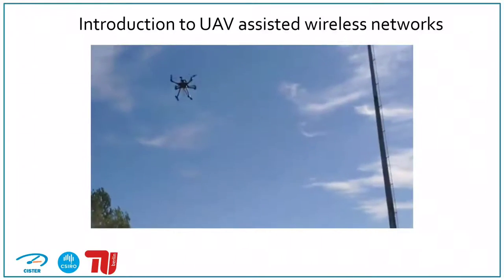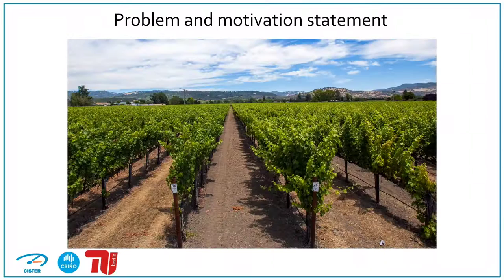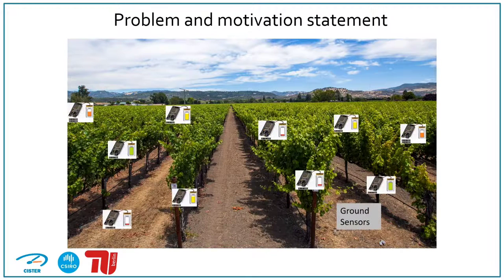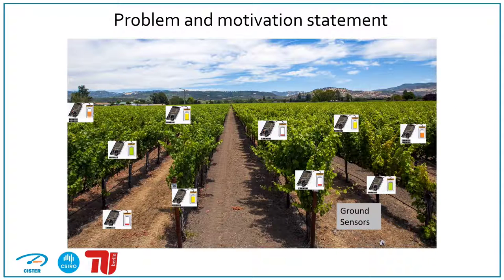This video represents a UAV hovering over a field to collect data. To understand the problem, let us take the example of precision agriculture. Usually the sensors on the ground are equipped with solar panels to harvest renewable energy. In case of rainy weather, this energy harvesting method is not very reliable. A reduced battery level of the ground sensor can prevent the data in the finite buffers from being transmitted, resulting in a buffer overflow.